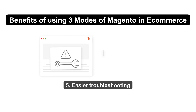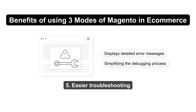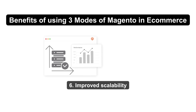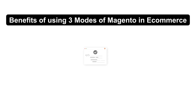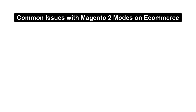Developer mode displays detailed error messages directly in the browser, simplifying the debugging process. Production mode prepares your store to handle increased traffic smoothly and reliably. Default mode allows straightforward testing without the complexities of the other two modes.